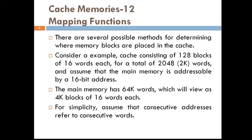We shall start with the concept of mapping functions. To understand the possible methods for specifying where the memory blocks can be placed in the cache, let us consider a simple example. Consider a cache consisting of 128 blocks of 16 words each, meaning one block contains 16 words and such 128 blocks are there in the cache, giving a total of 2048 words — or 2K words.